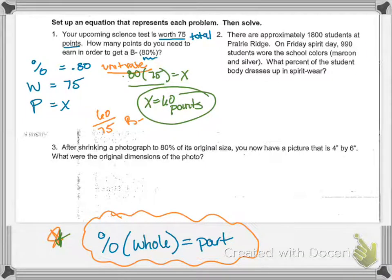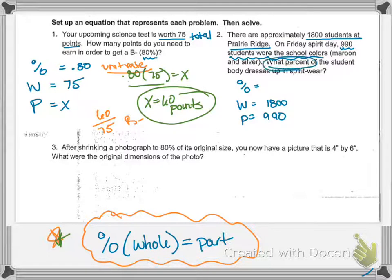Let's try the next one. So again, I'm solving a percent application problem, so I'm going to write percent WP. Those are the three things I need to find. I start off by it says I have 1,800 students at PR. That's a whole amount, that's a total amount. And then on Friday spirit day, I have 990 kids that wear school colors. So that's my partial amount, that's the part of the student body that wore spirit wear. And they're asking me this time, what is the percent? So that's what I'm missing.